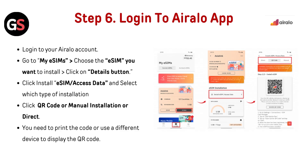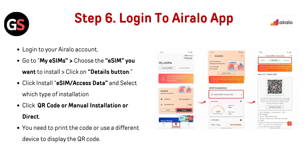Step 6 — Login to AirLo App: Login to your AirLo account and go to My eSIM. Choose the eSIM you want to install, click the Details button, then click Install eSIM or Access Data and select the type of installation: QR code, Manual Installation, or Direct. Note that you will need to print the QR code or use a different device to display it.